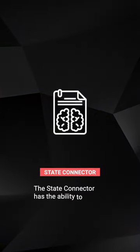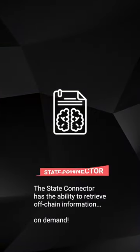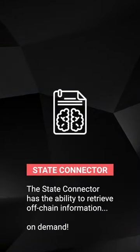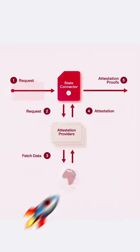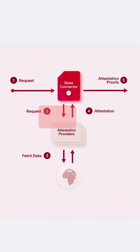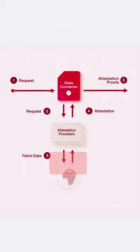It has the ability to retrieve off-chain information on demand. The data is gathered from requests to numerous attestation providers, which independently fetch the information and relay this back to the State Connector.